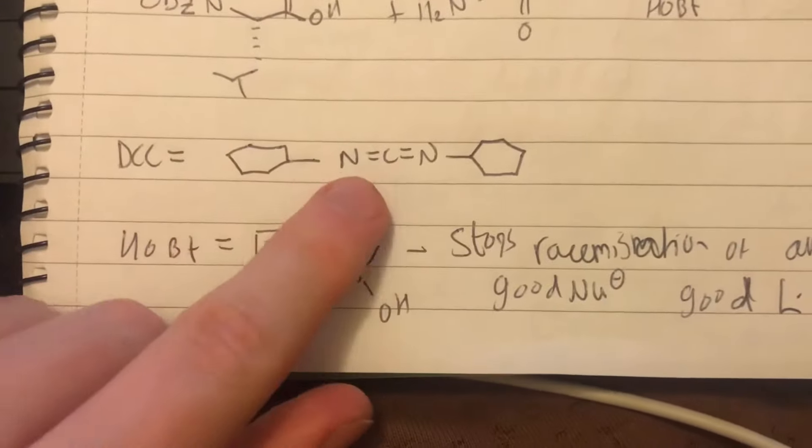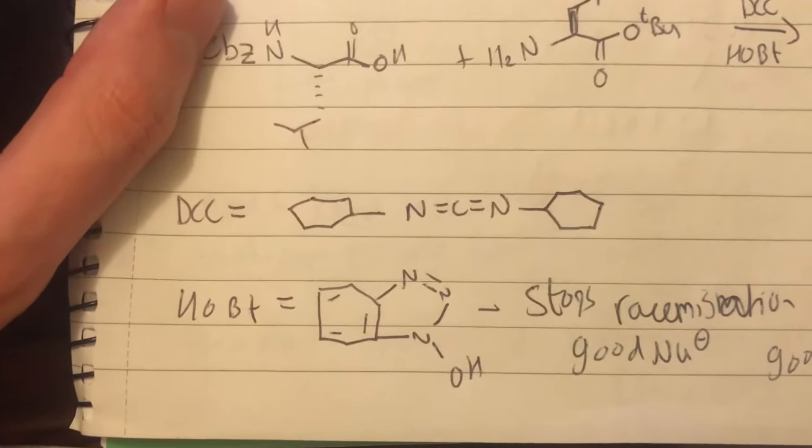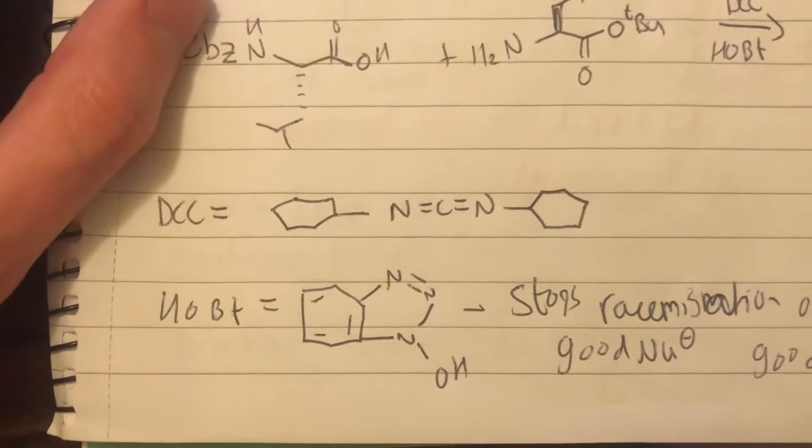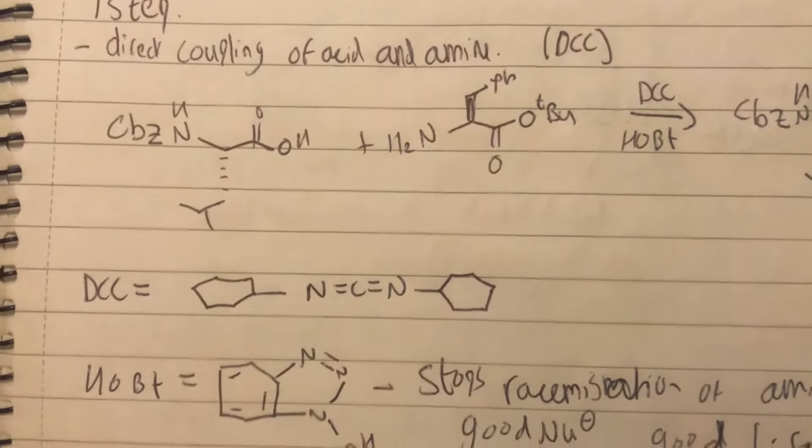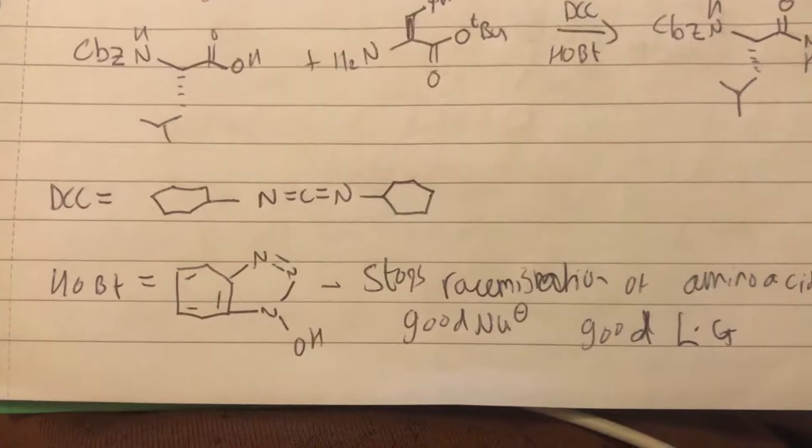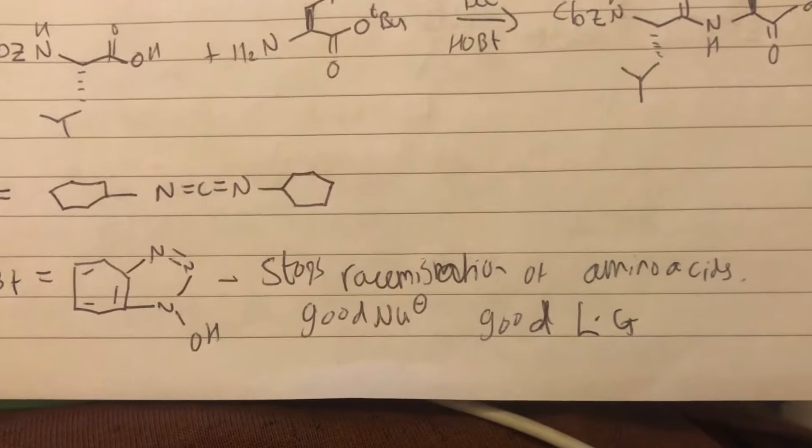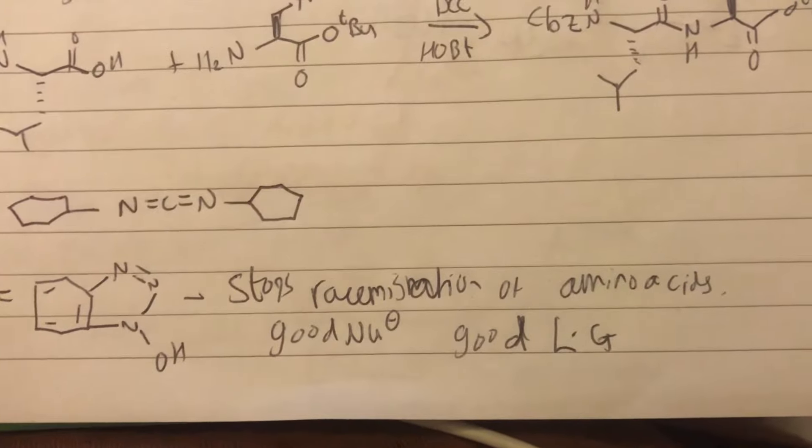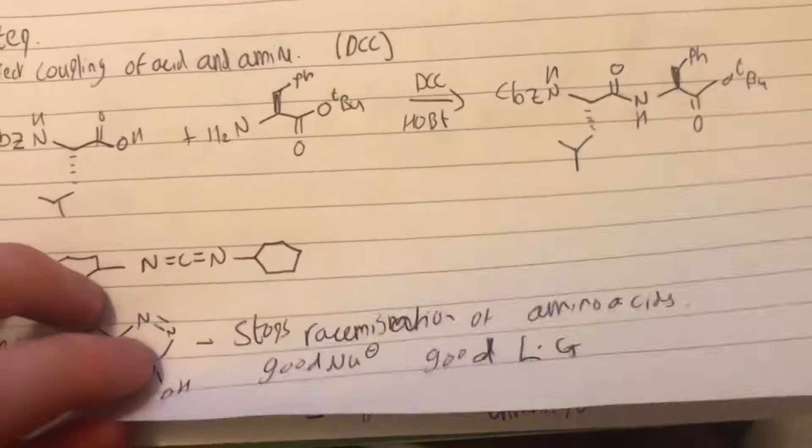DCC is a molecule. That obviously just forms the peptide bond straight away. DCC, something to remember, is dicyclohexyl carbodiimide. And this is HOBT here. As you can see, definitely something to remember as well, this stops racemization of amino acids. It's a good nucleophile and also a good leaving group when you need to get rid of it.